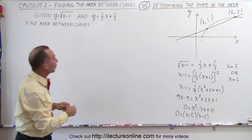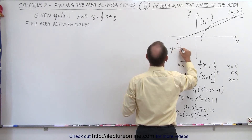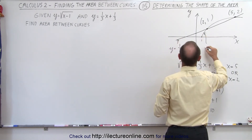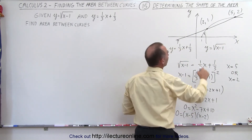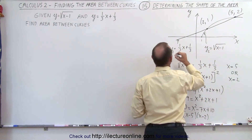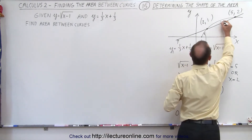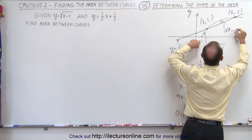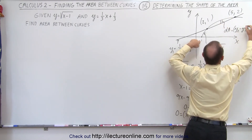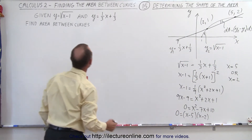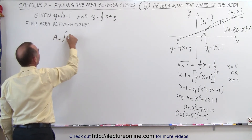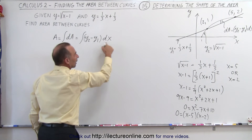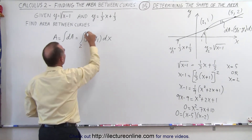Now we label the functions: y1 equals one-third x plus one-third (the lower function), and y2 equals the square root of x minus 1 (the upper function). We identify the area element dA, which equals the upper function y2 minus the lower function y1 — that's the height of the area element — times dx, the width.